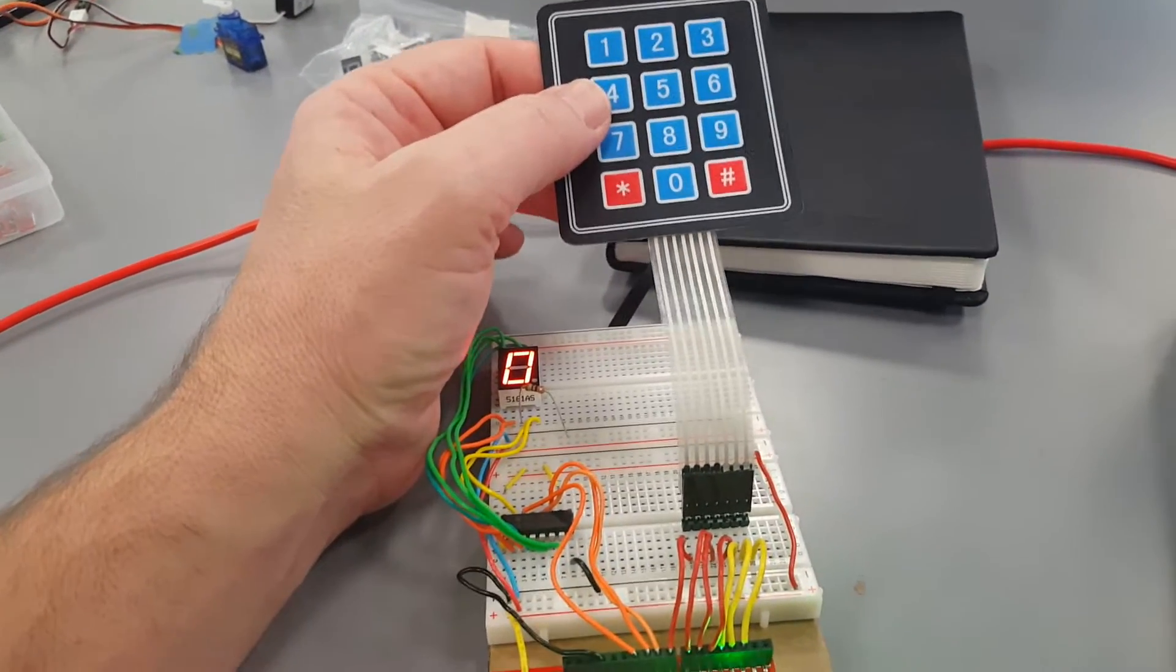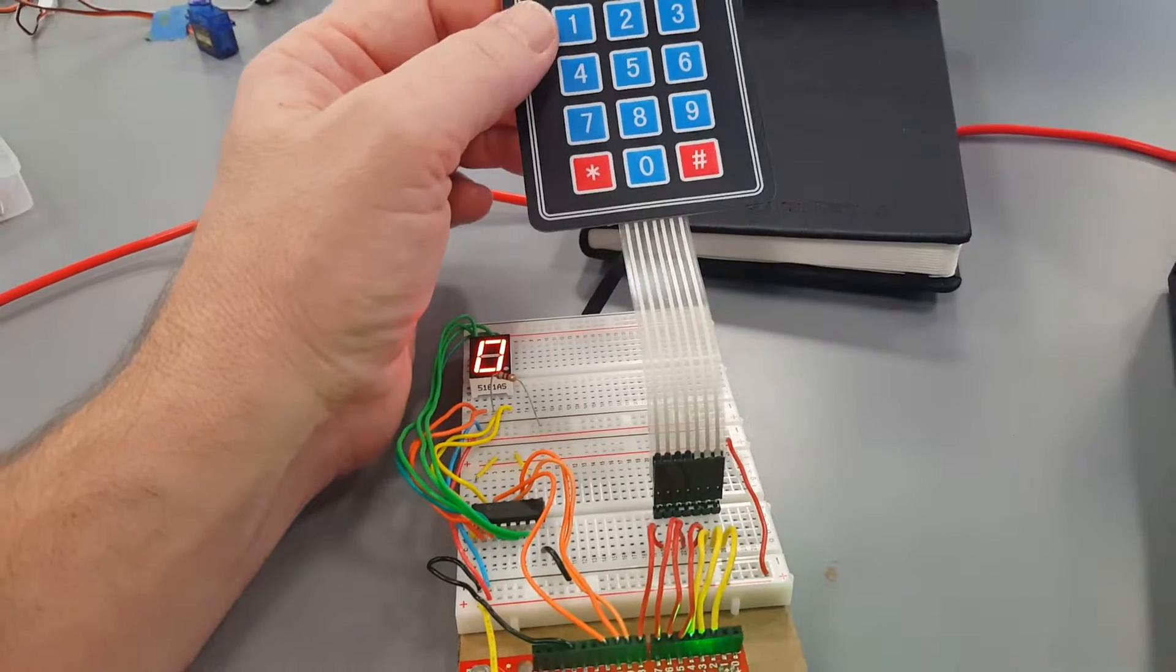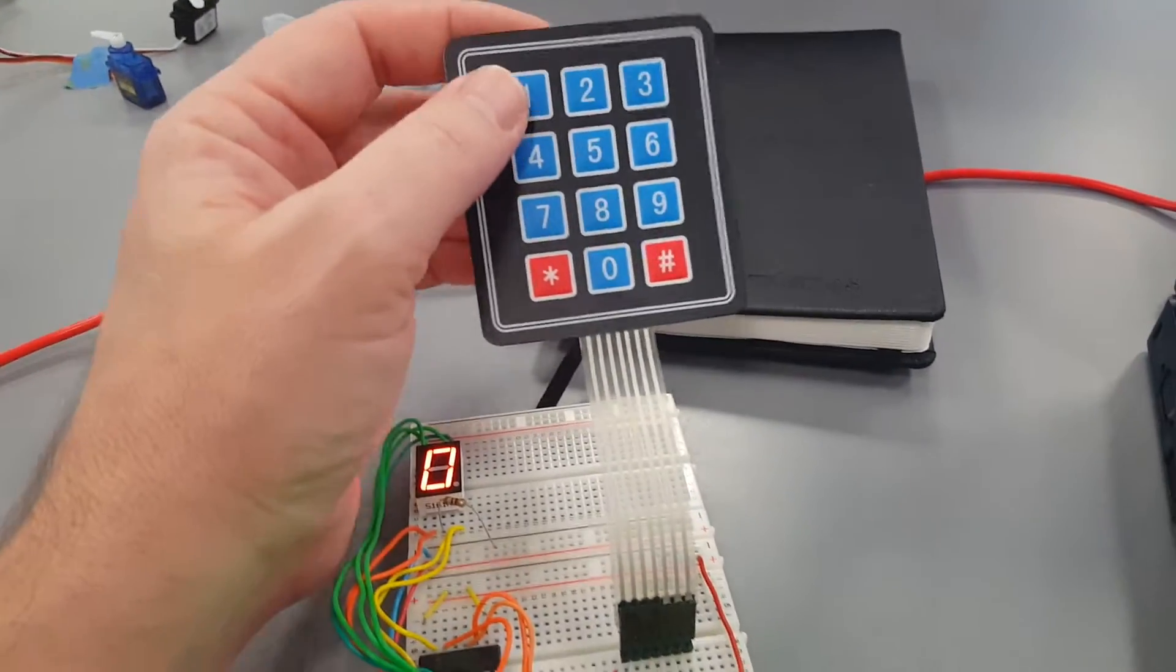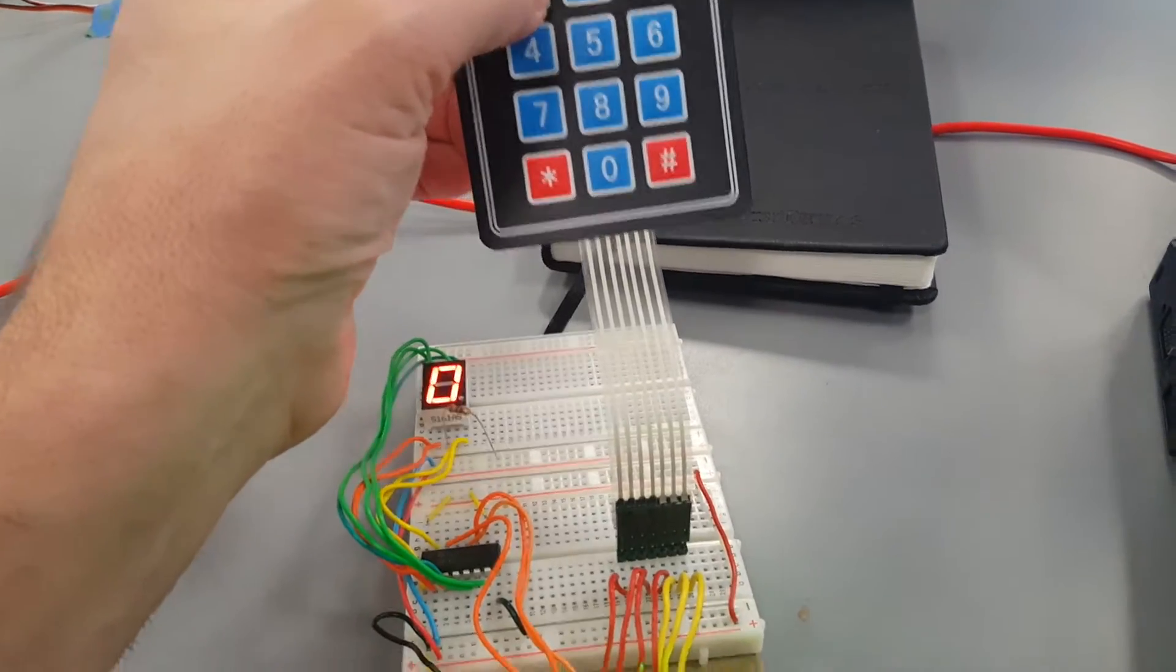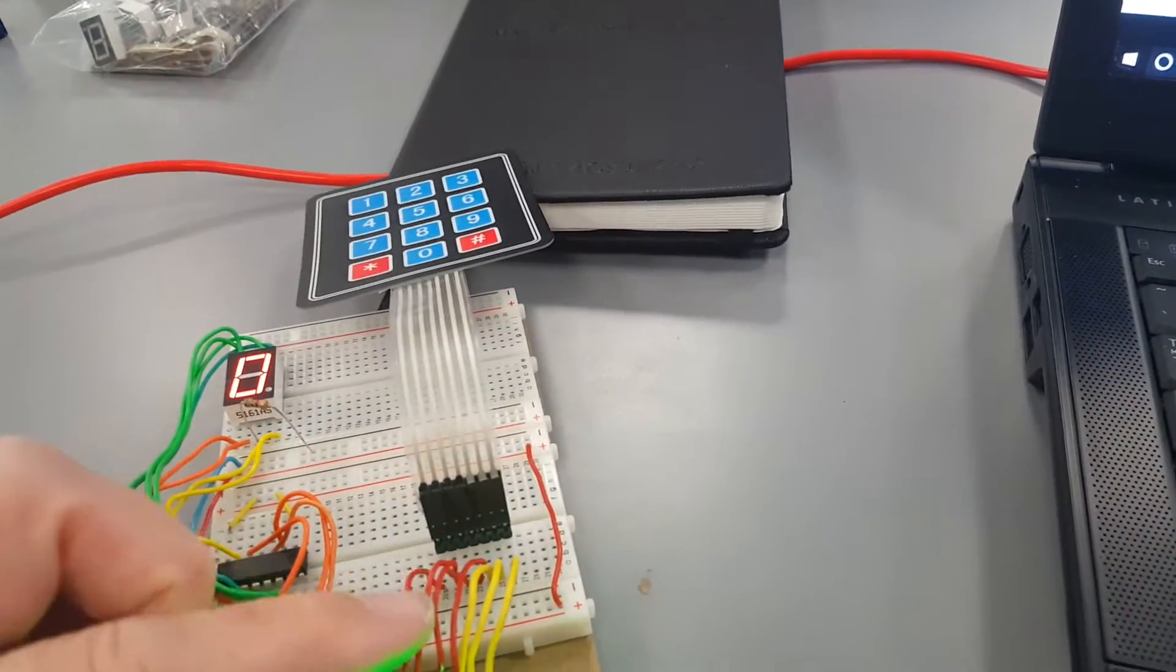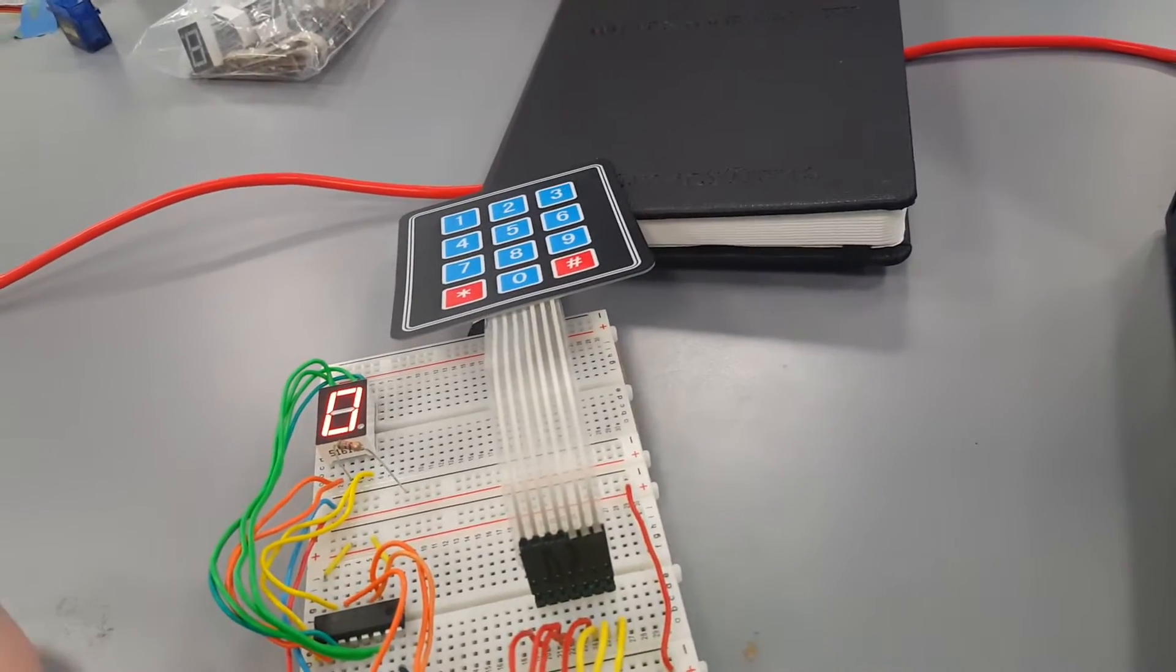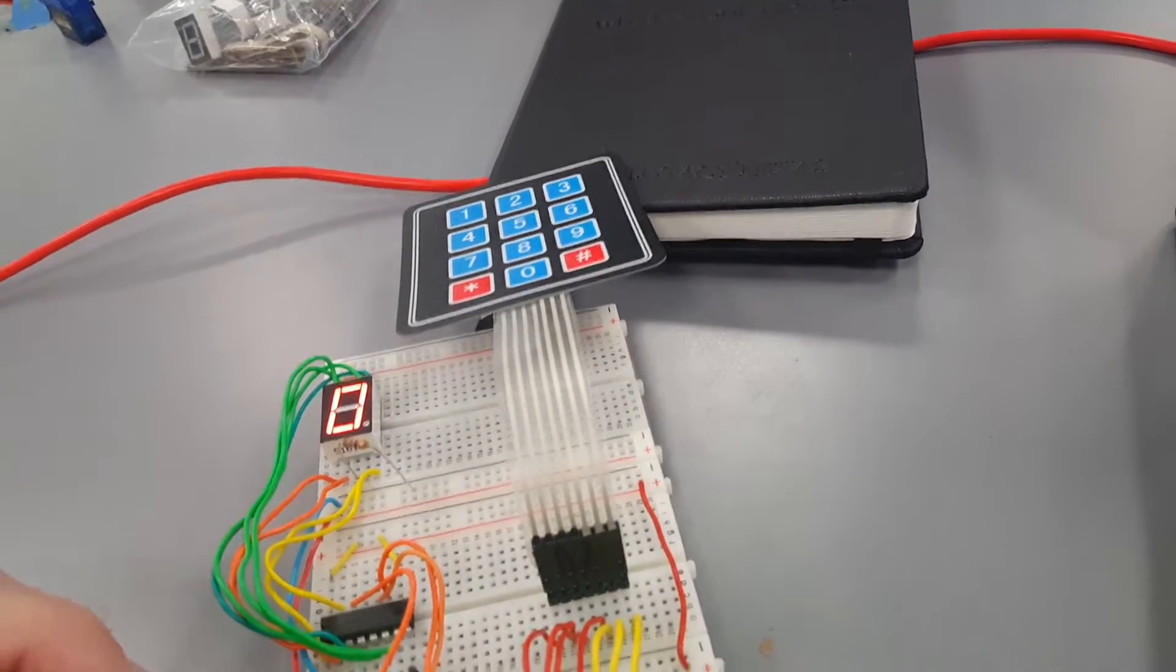This is David Rebe at the Forge, demonstrating one of Adafruit's 3x4 matrix keypads. This is interfacing with the parallel hookup through the Arduino pins two through eight.